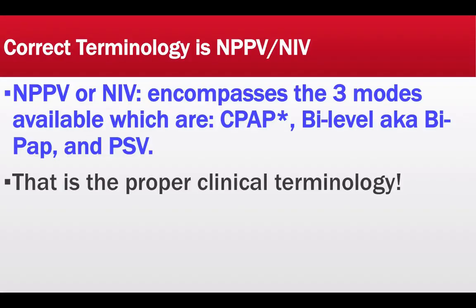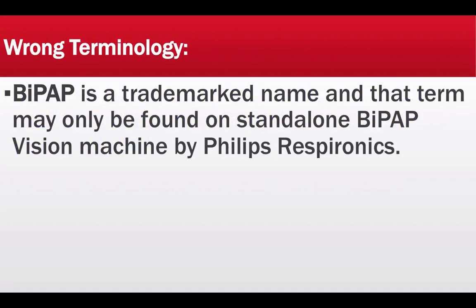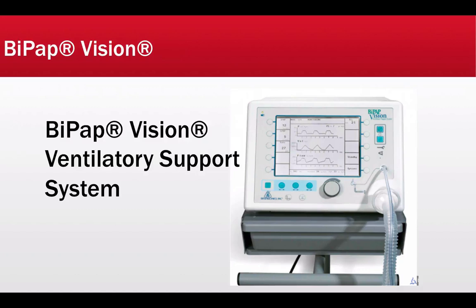As stated at the beginning of the presentation, the correct terminology is NPPV or NIV, an umbrella term encompassing all three modes: CPAP, BiPAP, and PSV. That is the proper clinical terminology and should be used in the clinical setting. At times you will hear clinicians — including respiratory therapists, physicians, and nurses — refer to all the modes collectively as BiPAP, which is actually incorrect. BiPAP is a trademark name that may only properly be found on standalone BiPAP Vision machines made by Philips Respironics, as clearly shown on the machine pictured here.